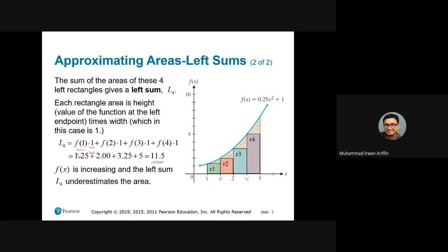So we use standard geometric area to approximate this area. However, take note that by using standard geometry, we are underestimating the area because there are areas that are not taken into account. Because of that, the left sum basically underestimates the area. After summing these four rectangles, the sum is 11.5. We know the actual area will be greater than 11.5.